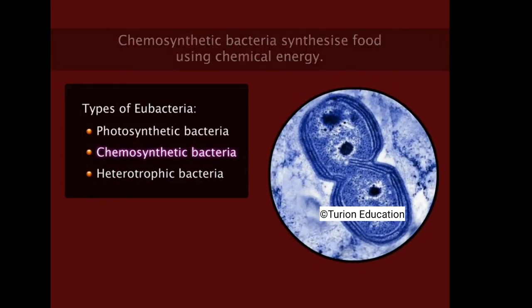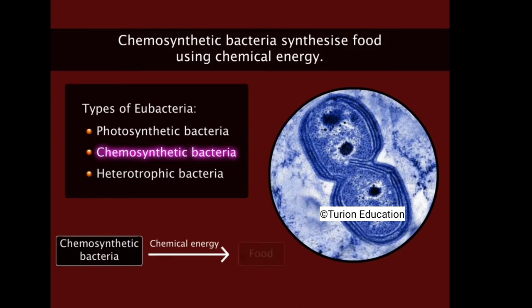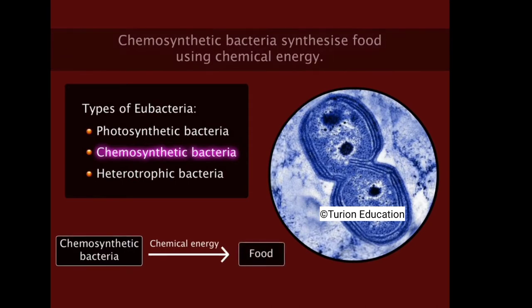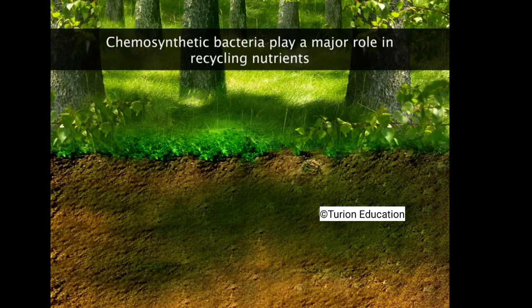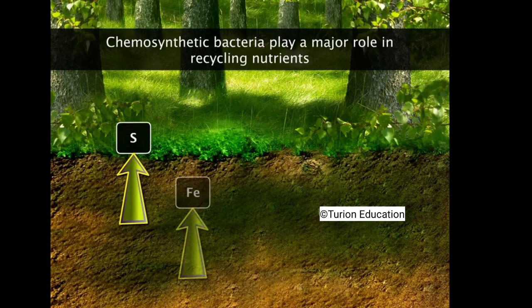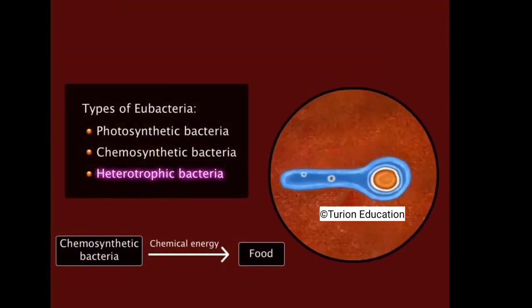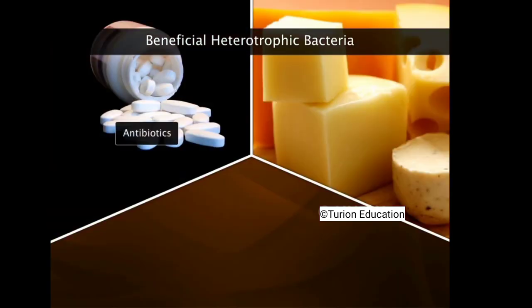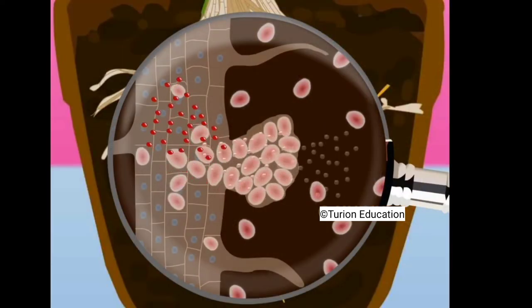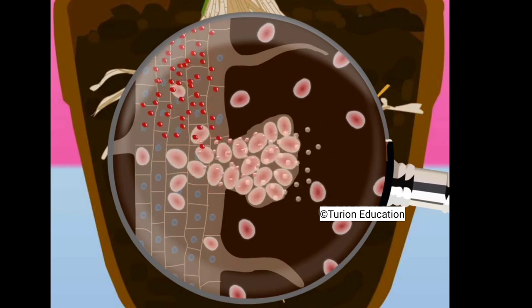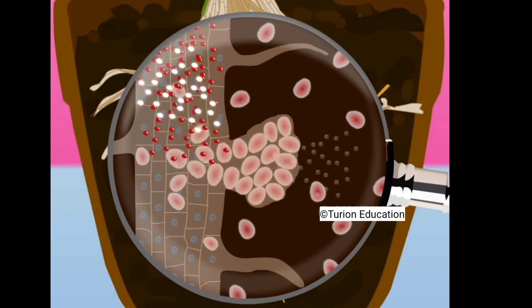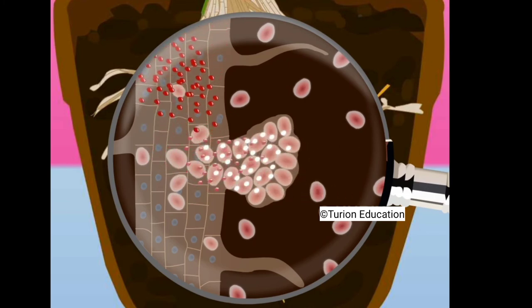Chemosynthetic bacteria synthesize food using chemical energy and play a major role in recycling nutrients such as sulfur, iron, phosphorus, and nitrogen. Heterotrophic bacteria are mostly decomposers. Many are beneficial — used in production of antibiotics, making yogurt and cheese, increasing soil fertility by fixing nitrogen, and cleaning the environment by decomposing rotting materials and returning nutrients to the environment.